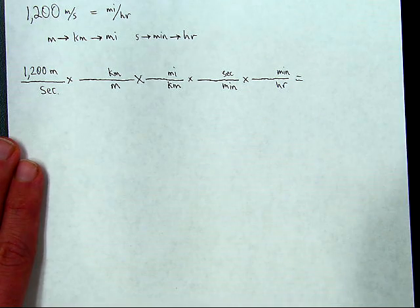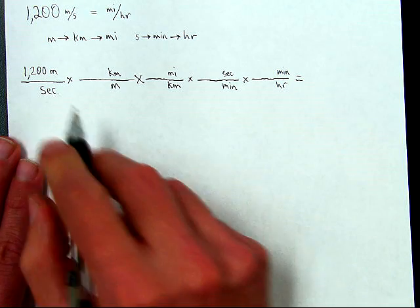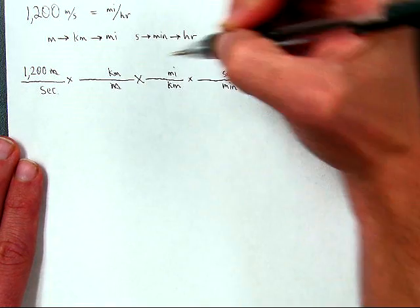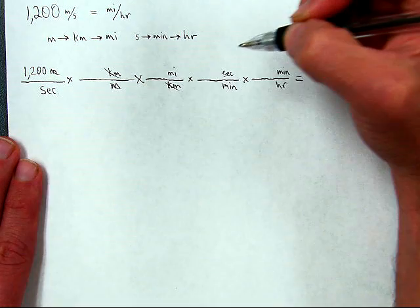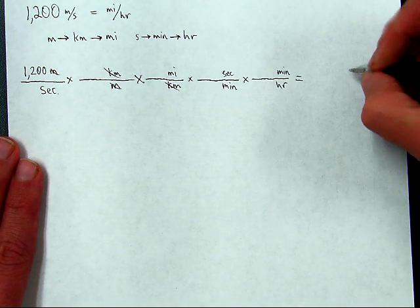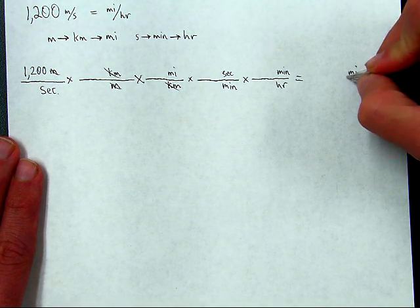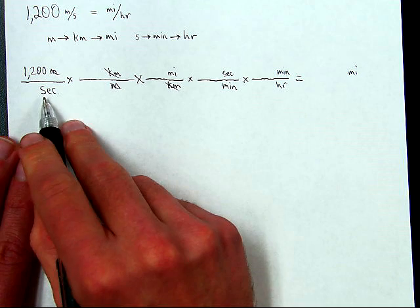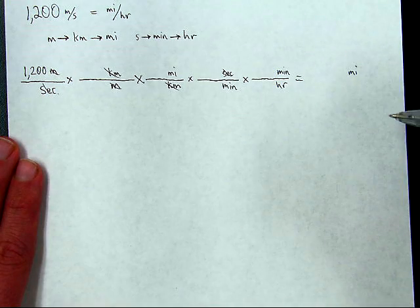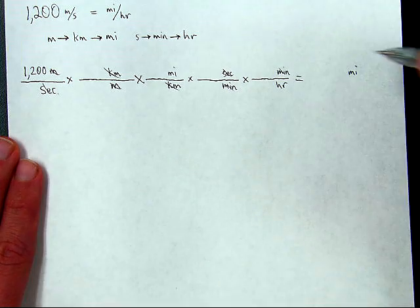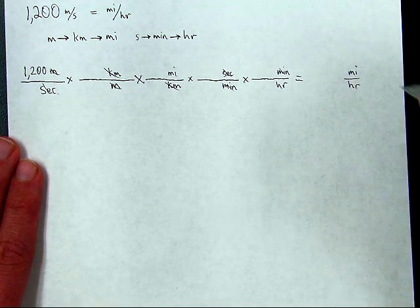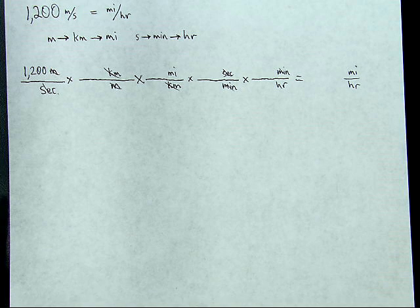So that should give miles, let's see, miles per hour. Let's just double check. Meters cancels meters, kilometers cancels kilometers, nothing cancels miles - good, because that needs to be at the top at the end. Seconds cancels with seconds over here, good, that's not supposed to be part of the final answer. And minutes cancels minutes, good, leaving hours at the end. That's part of my final answer.